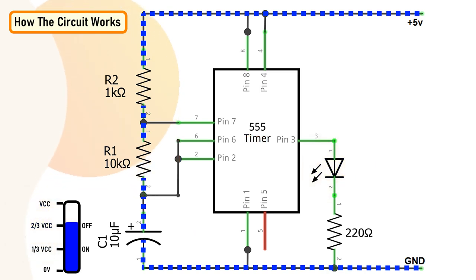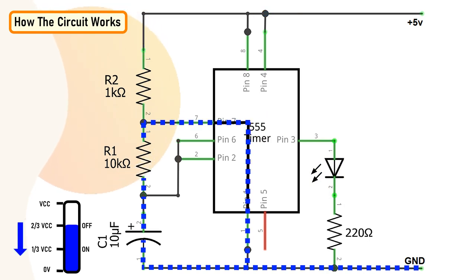At the same time, pin number 7 will internally reconnect to ground, causing the capacitor C1 to discharge via the resistor R1. Once the voltage across the capacitor C1 falls below one third of the supply voltage, pin number 2 turns on the output and the above cycle continues.